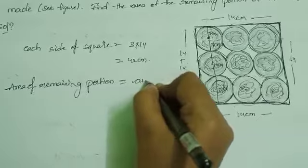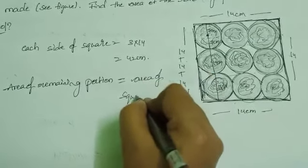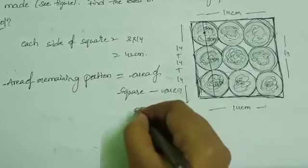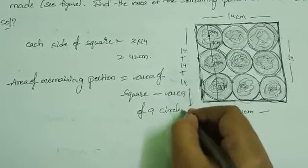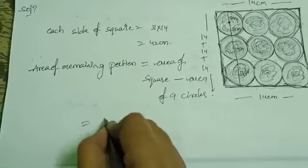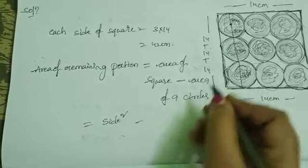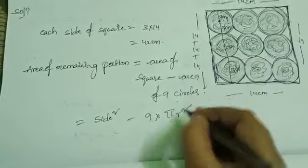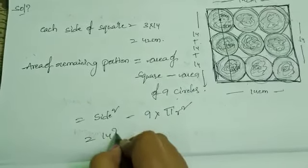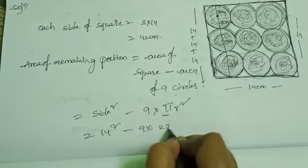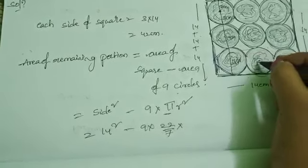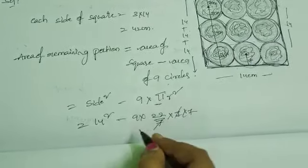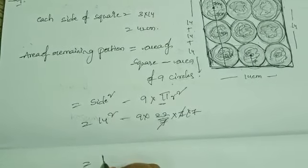Area of remaining portion = area of square − area of nine circles. Area of square = side² and area of nine circles = 9 × π r². So: side² = 42² and 9 × (22/7) × 7² — the 7s cancel, giving 9 × 22 × 7.